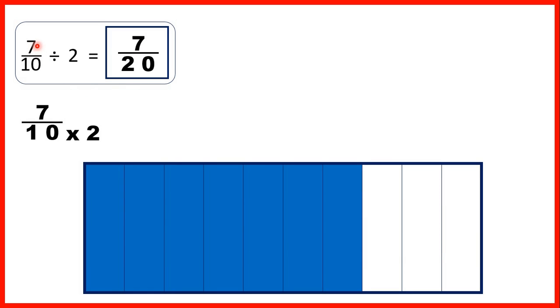Then we had 7 tenths divided by 2. Now remember, dividing by 2 is the same as finding half of something.